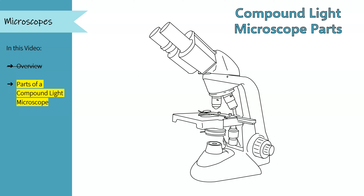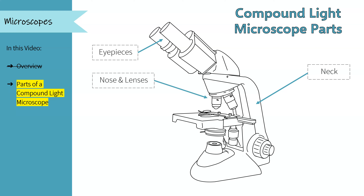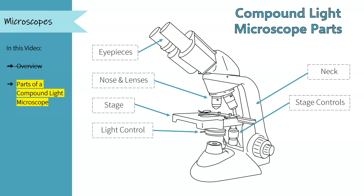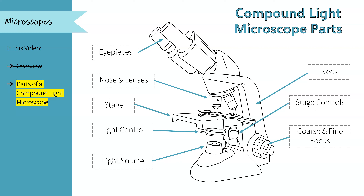Here's an outline of our microscopes and these are the most important parts: the eyepieces, the neck, the nose with the objective lenses attached, the stage and the stage controls to move the stage forward and back, the light control and the light source — which is below the stage where our slide will sit — and the coarse and fine focus. The coarse knob is the wider knob with the larger diameter, and the fine focus is the one that sticks out a bit more with the smaller diameter. And of course the power switch, which is on the back of the microscope.